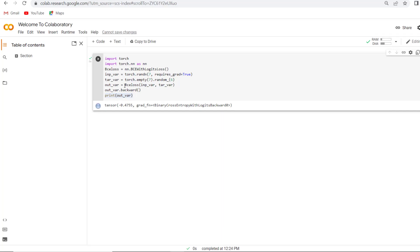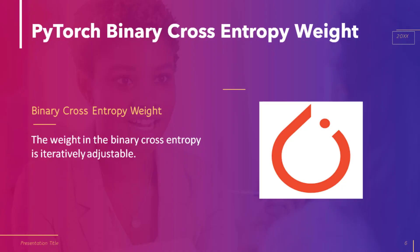Now let's move to our next topic: PyTorch binary cross entropy weight. As we know, it creates a function that measures the binary cross entropy between the input and the target probabilities. The weight in binary cross entropy is iteratively adjustable. Now see the implementation of how PyTorch binary cross entropy weight works.